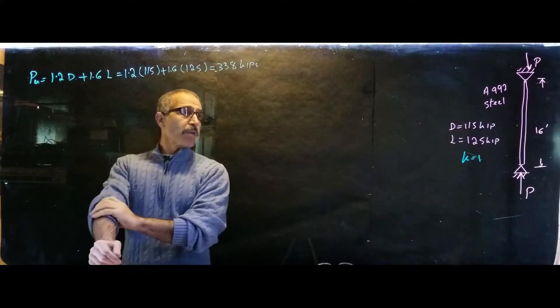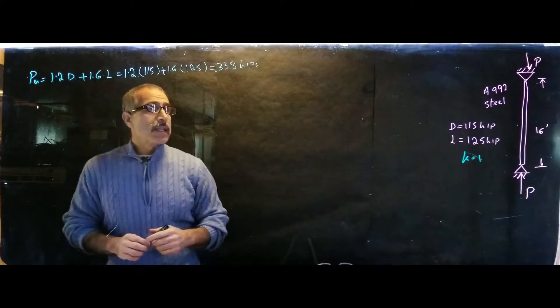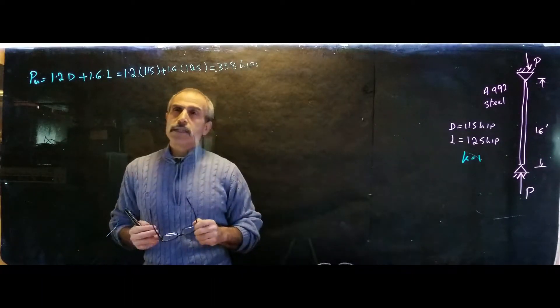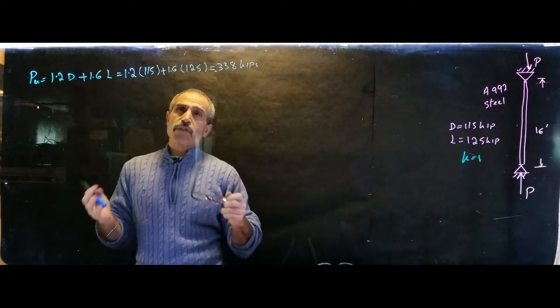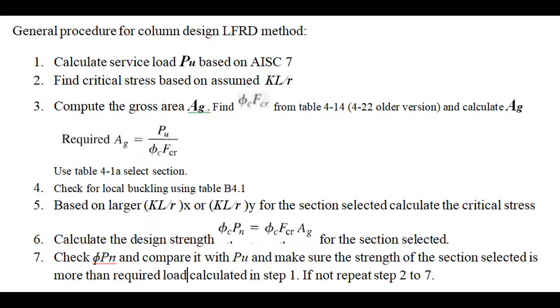Now we know our load. The design procedure that you want to follow, take a look at what I have on the screen. You really want to follow these seven steps. Step one is calculating the service load, which we did. Step two, find critical stress based on assumed KL over ry slenderness ratio.